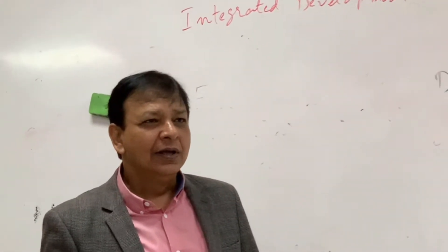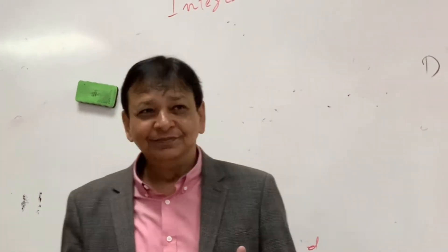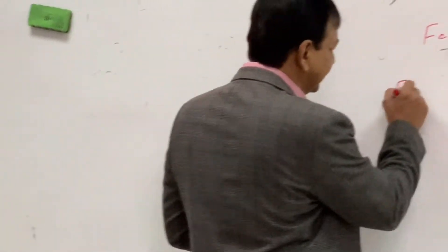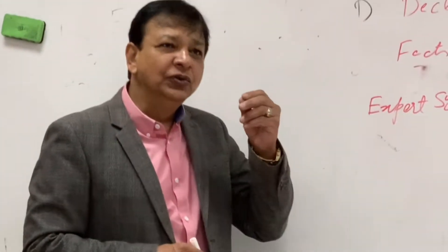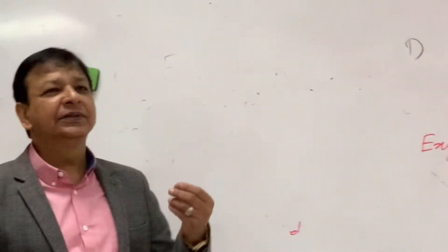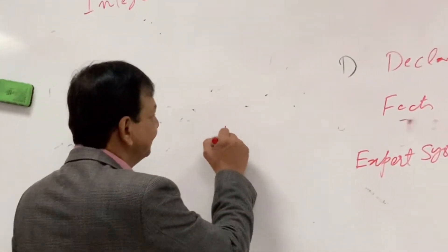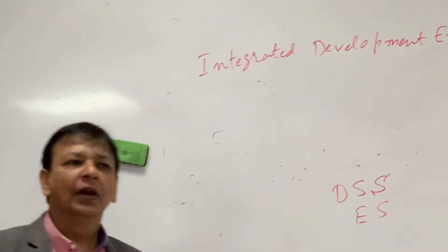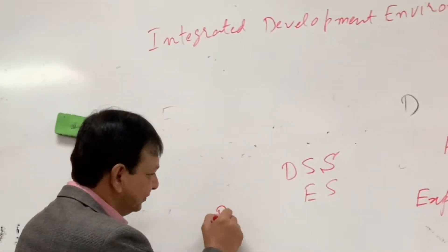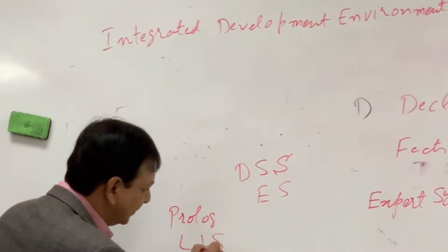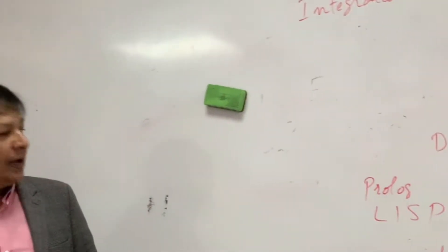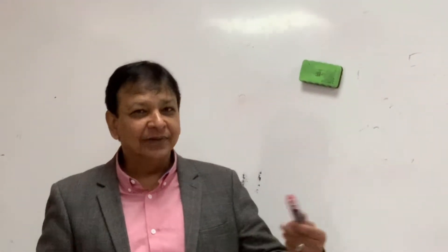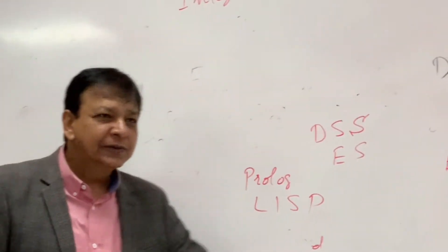We use declarative programming to develop expert systems (ES) and decision support systems (DSS). For example, GPS and Google search use this approach. The languages used are Prolog — which stands for 'Programming in Logic' — and LISP, which stands for 'List Processing.'